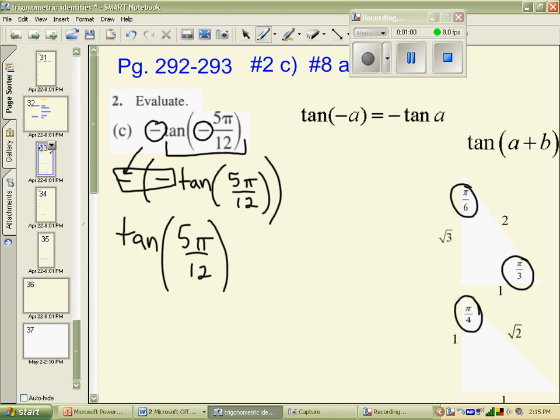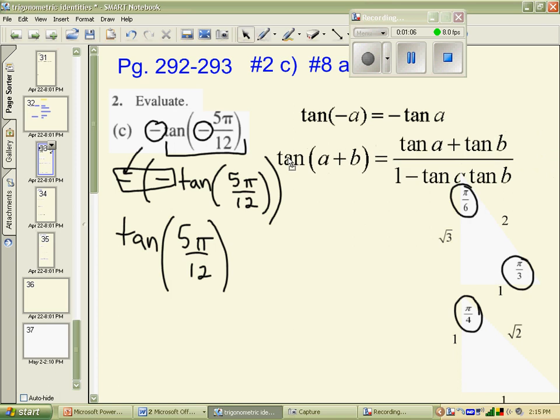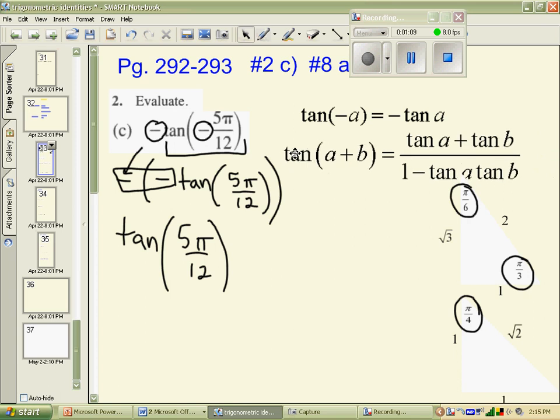But we could maybe use those angles in a relation of two angles being added up to give one of the two angles from the special triangles that could add up to give 5π over 12. The easiest way to see that would be to change each of the angles, the denominators, into something over 12.